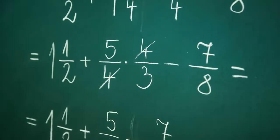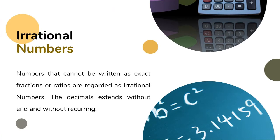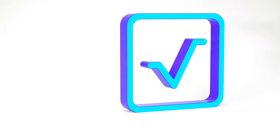Irrational numbers are numbers that cannot be written as exact fractions or ratios. Their decimals extend without end and without recurring. Numbers that involve square roots fit in this situation. X can be any number, it can be a decimal.